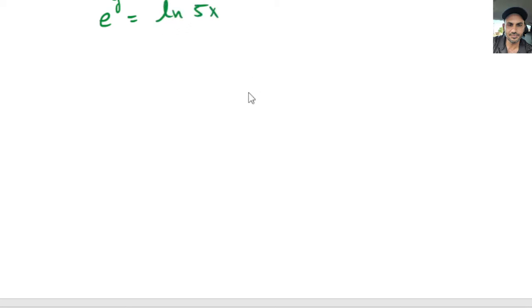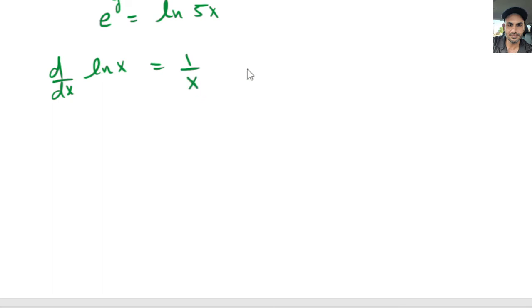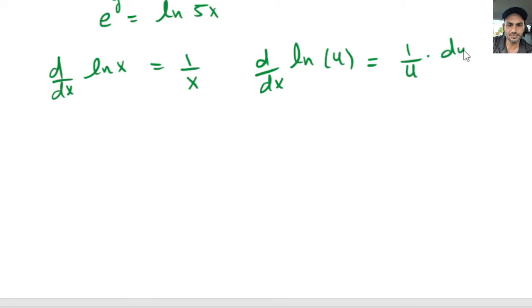Now here we can use another derivative rule. We learned that d over dx of the natural log of x equals 1 over x. Similarly, if we take d over dx of ln of u, where u is some function of x, it's going to be 1 over u times du over dx. So the derivative of ln of u is 1 over u times du over dx.